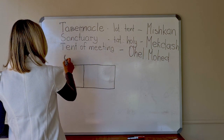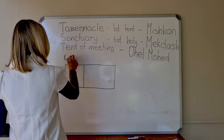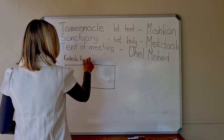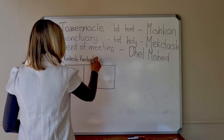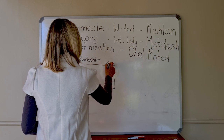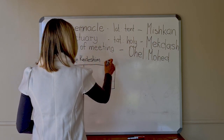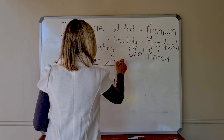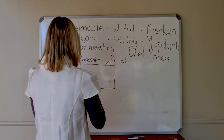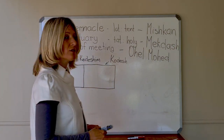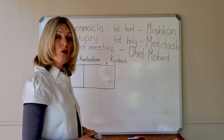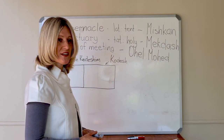So the first one is Kodesh Kodeshim. The second one is Kodesh. And the third part was Kodesh or Ohel Moed — the court of the sanctuary.